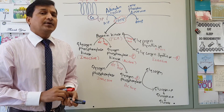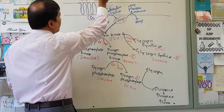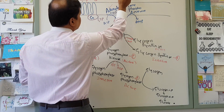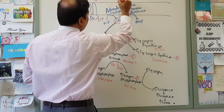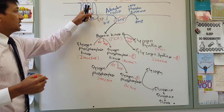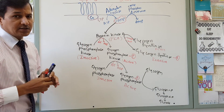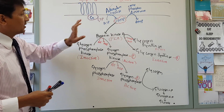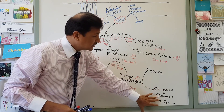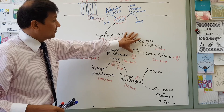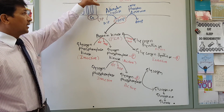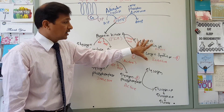The same mechanism occurs when epinephrine is elevated. Epinephrine binds to the beta-adrenergic receptor, which is also a G protein-coupled serpentine receptor, triggering the same signaling cascade. This causes increased glycogen breakdown and decreased glycogen synthesis, just as glucagon does.